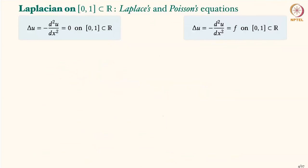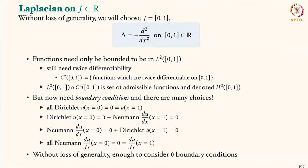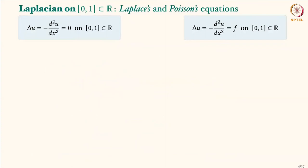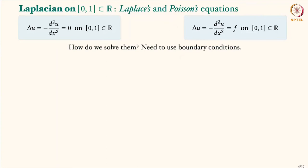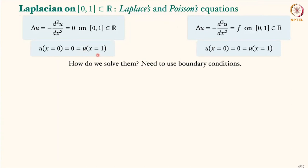We now have the Laplacian operator in 1D on [0,1] with boundary conditions, and we can define two kinds of problems. If the right-hand side is zero, it's called Laplace's problem. If the right-hand side is some given function f, it's called Poisson's problem or the Poisson equation. To solve them we use the boundary conditions. For understanding, we'll stick with zero Dirichlet boundary conditions at both x=0 and x=1.